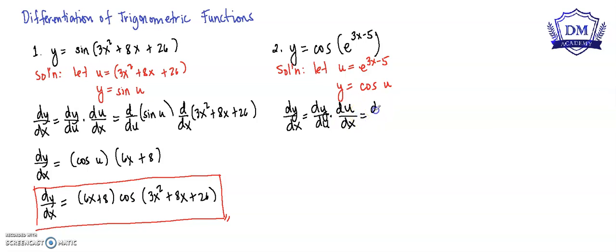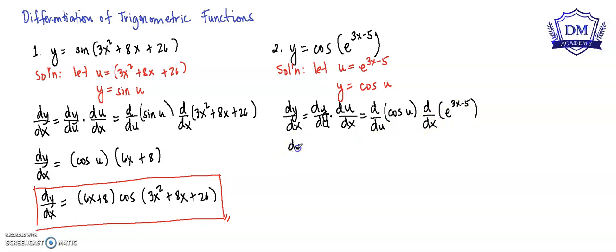This is equal to the derivative of y, which is cosine u, multiplied by the d/dx of u, which is e raised to 3x minus 5. So dy/dx is equal to the derivative of cosine u, which is negative sine u.